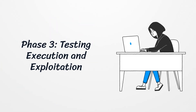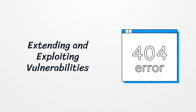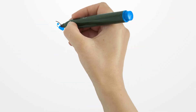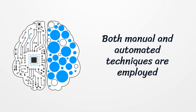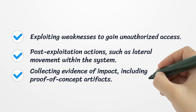Phase 3 is Testing Execution and Exploitation, where the simulated attacks begin. This phase focuses on actively exploiting the vulnerabilities discovered in Phase 2 to emulate real-world attacks. Both manual and automated techniques are employed, supported by AI-driven simulations and anomaly detection to enhance accuracy. Activities include exploiting weaknesses to gain unauthorized access, post-exploitation actions such as lateral movement within the system, and collecting evidence of impact, including proof-of-concept artifacts.